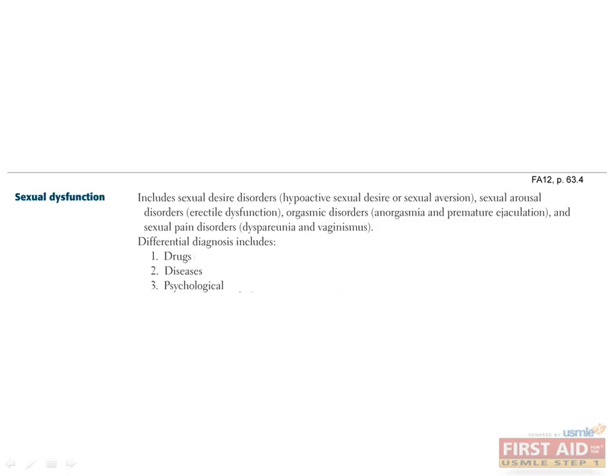What types of drugs can cause sexual dysfunction? Drugs that may cause sexual dysfunction include antihypertensives like beta blockers, antihistamines, neuroleptics, antidepressants, alcohol, and narcotics.